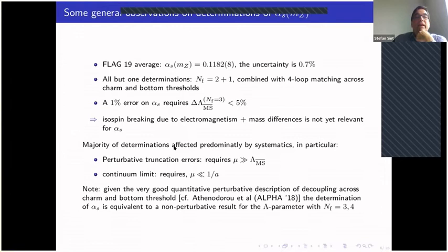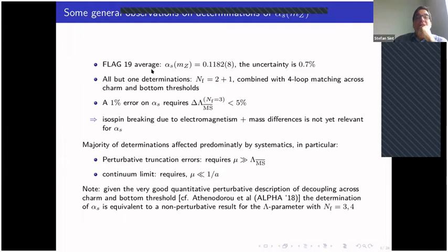Some general observations about determinations of alpha_s: in the FLAG 19 average, the uncertainty is about 0.7 percent. All but one of the determinations are N_f equals two-plus-one, combined with four-loop matching across charm and bottom thresholds. A one-percent error on alpha_s requires, essentially, on the lambda parameter for three flavors, an error that is less than five percent as a rule of thumb.